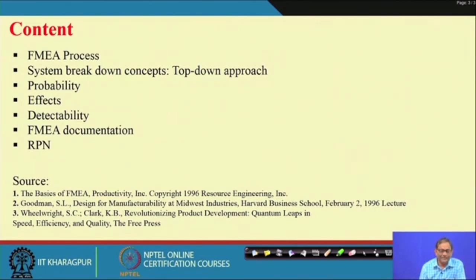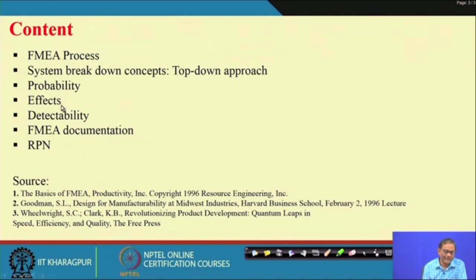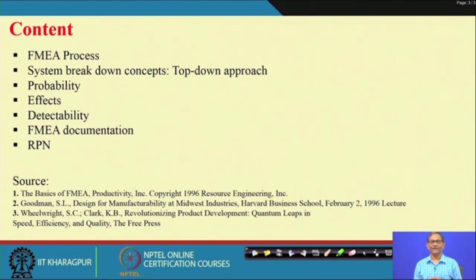Last class we discussed the bottom-up approach for system breakdown. Today I will give you the top-down approach, then the parameters for Risk Priority Number calculation — that is probability, severity, and detectability. Those qualitative scales will be shown to you, and then the format for documenting the total FMEA analysis will be given. Finally, the calculated RPN will be used to prioritize failure modes using Pareto analysis.